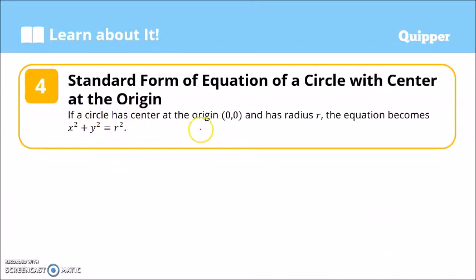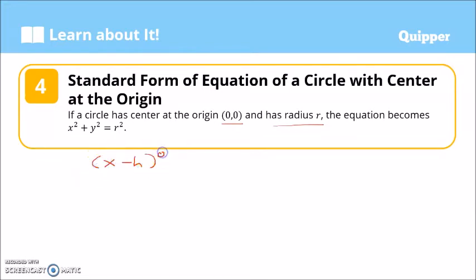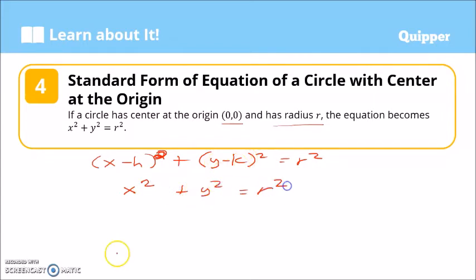If a circle has its center at the origin (0, 0) and radius r, the equation becomes x² + y² = r². This is simpler because (x − 0) is just x and (y − 0) is just y, so from the general standard form (x − h)² + (y − k)² = r², substituting h = 0 and k = 0 gives x² + y² = r².